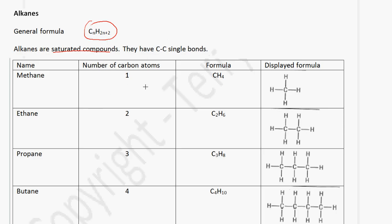The first member of this homologous series has one carbon atom. If we use the general formula, we would not write the 1, so we put CnH2n plus 2 which is 4. So that's how we got CH4. And the displayed formula is written as a carbon with 4 hydrogen atoms around it.